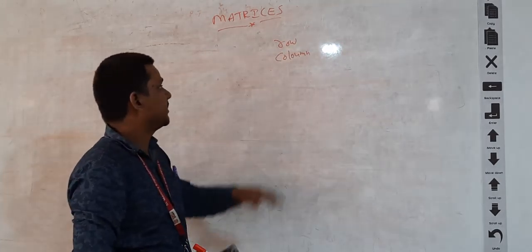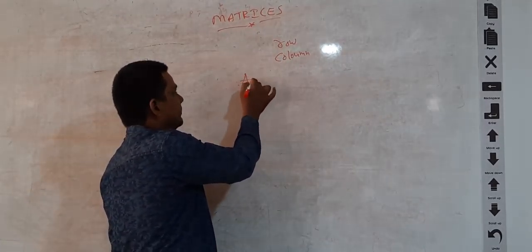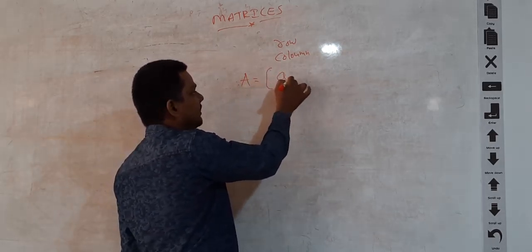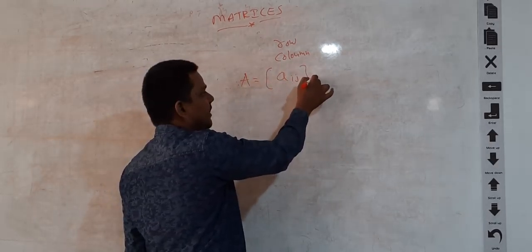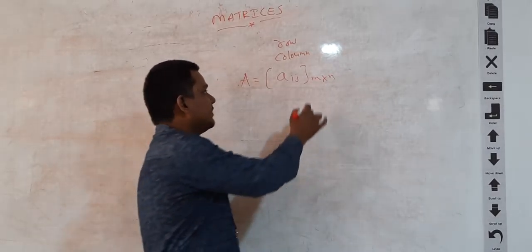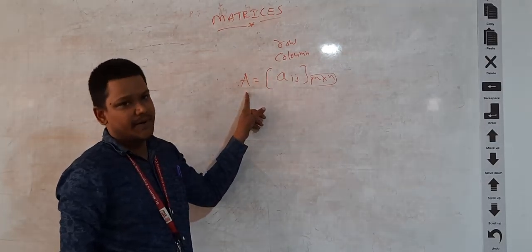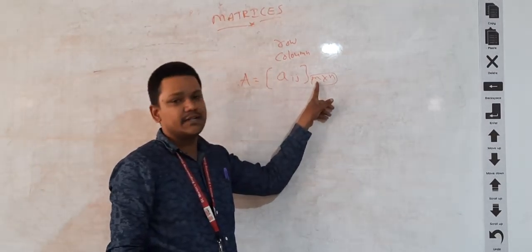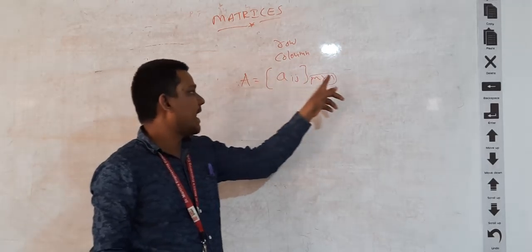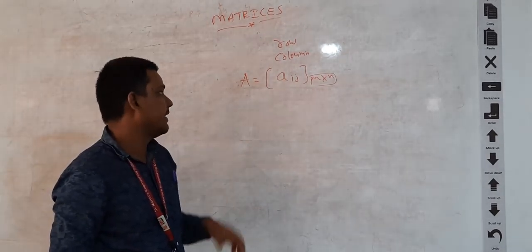The arrangement of elements can be made in rows and columns. The matrix is denoted with capital letter A, and whose general element form is A-i-j of order m by n. Here, m by n is called the order of matrix A, where m stands for the number of rows and n stands for the number of columns of matrix A.